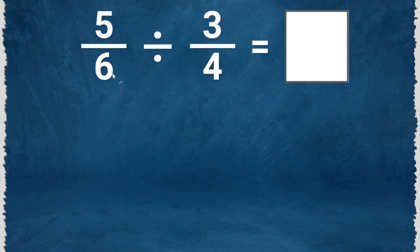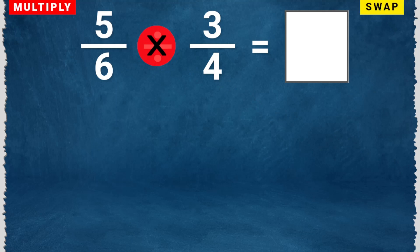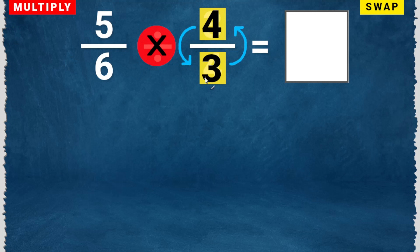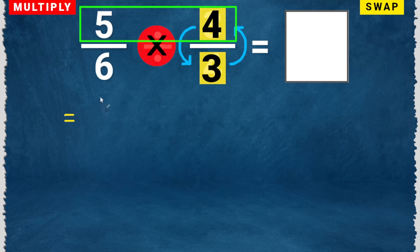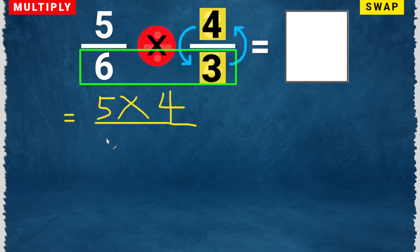5 over 6 divided by 3 over 4. Multiply — change this to multiply, and then swap. This will become 4 over 3. Then multiply the numerators: 5 times 4. Over — multiply the denominators: 6 times 3.